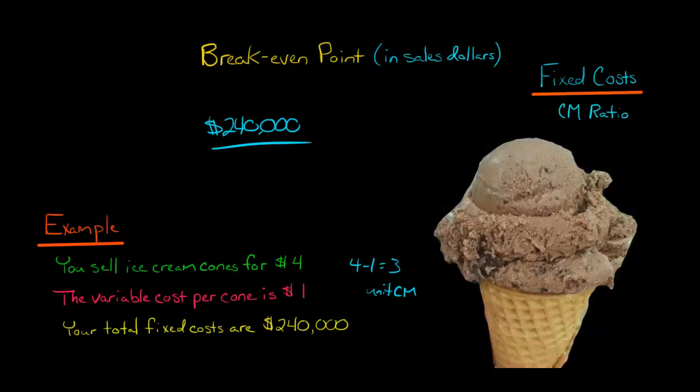Okay, and then once we know that unit contribution margin, we divide it by the selling price, which is 4, and that gives us 0.75. And what does that mean?